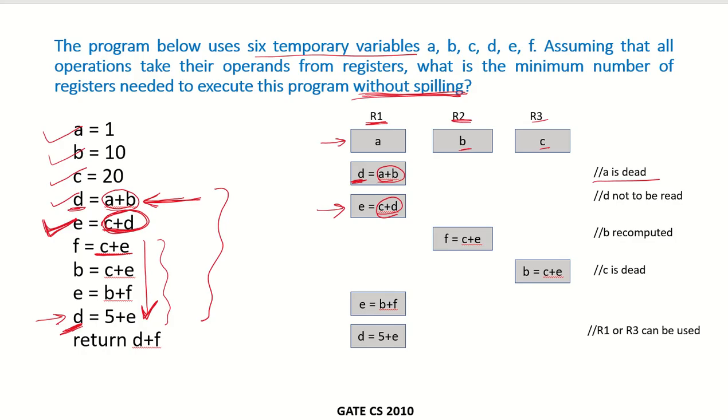Why is that? Because we see that in the next instruction over here, b is being recomputed again. That means b is not required in the next instruction. Its original value is not required. So we can override b in register R2 to store the value of f.